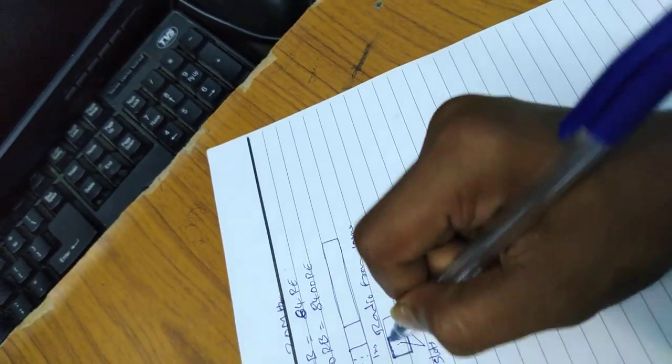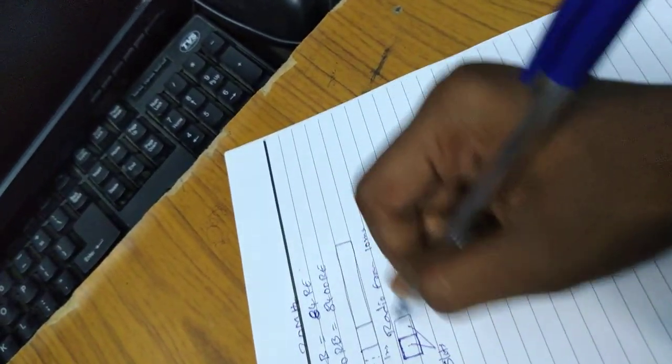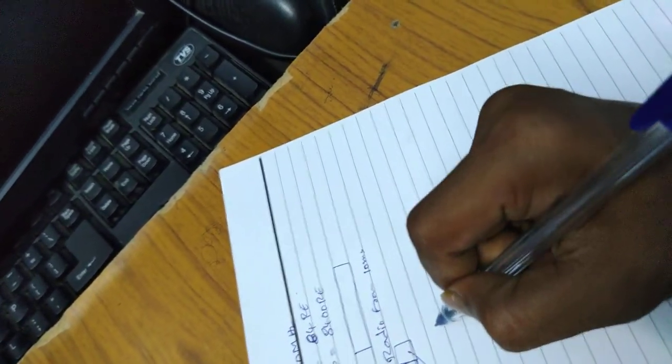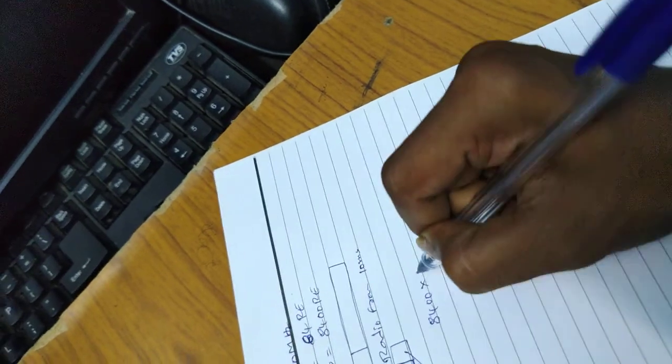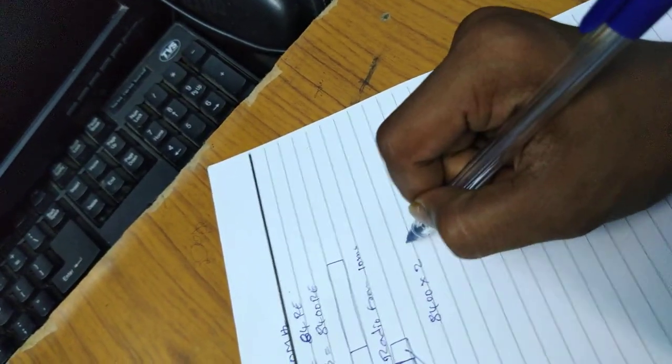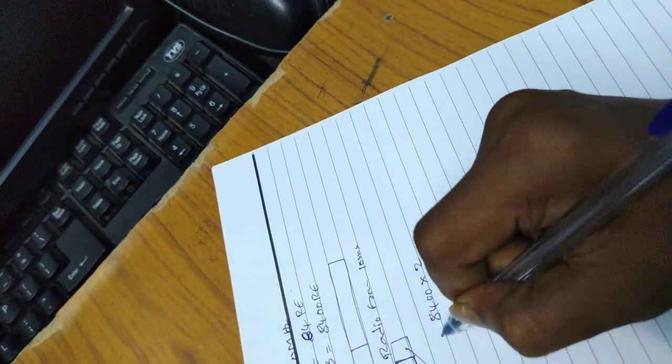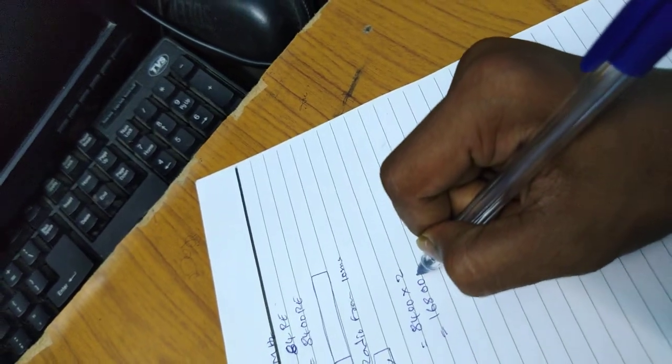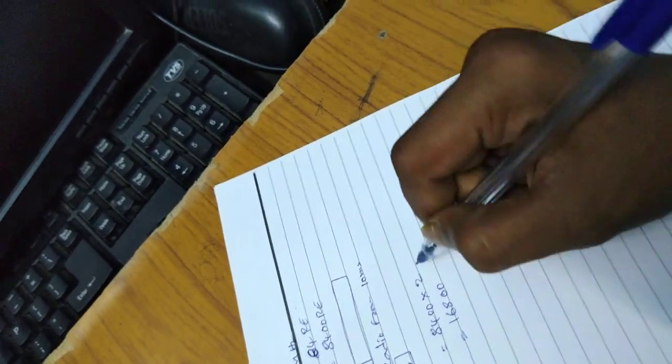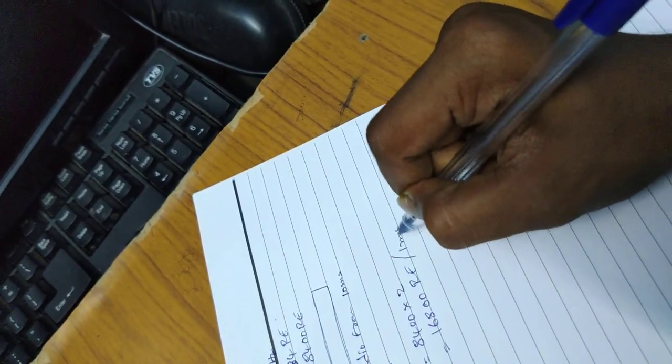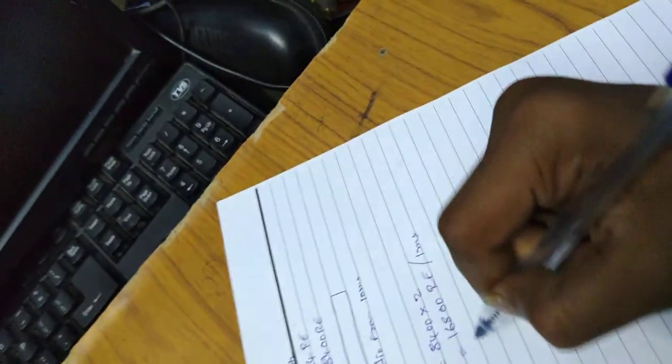We are calculating two slots. That is 8,400 into 2, which gives us 16,800 resource elements for one millisecond.